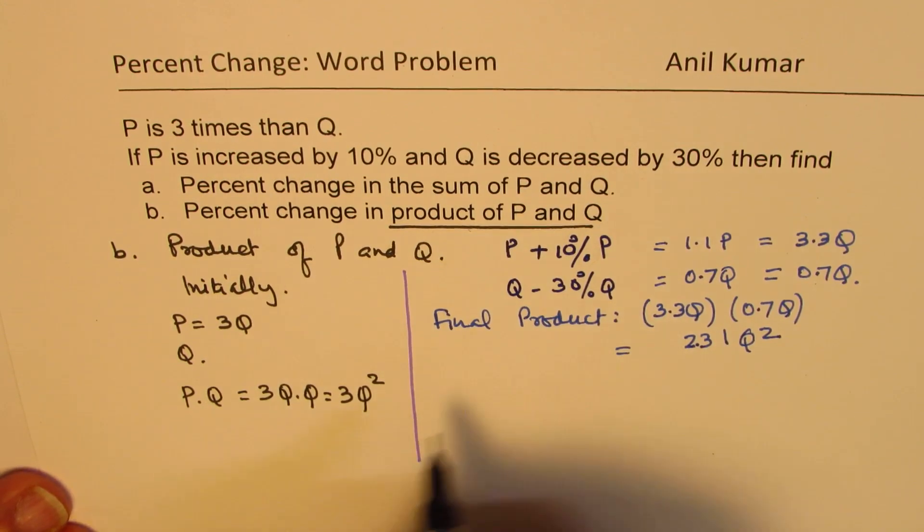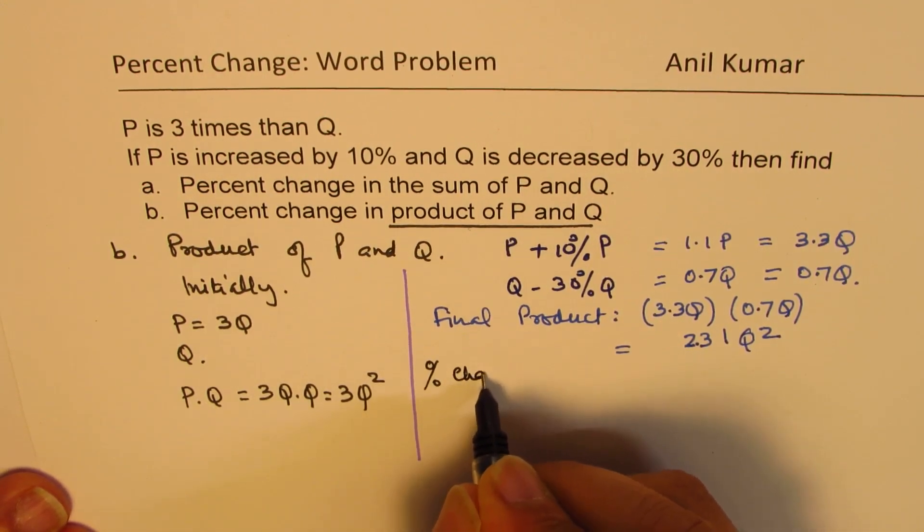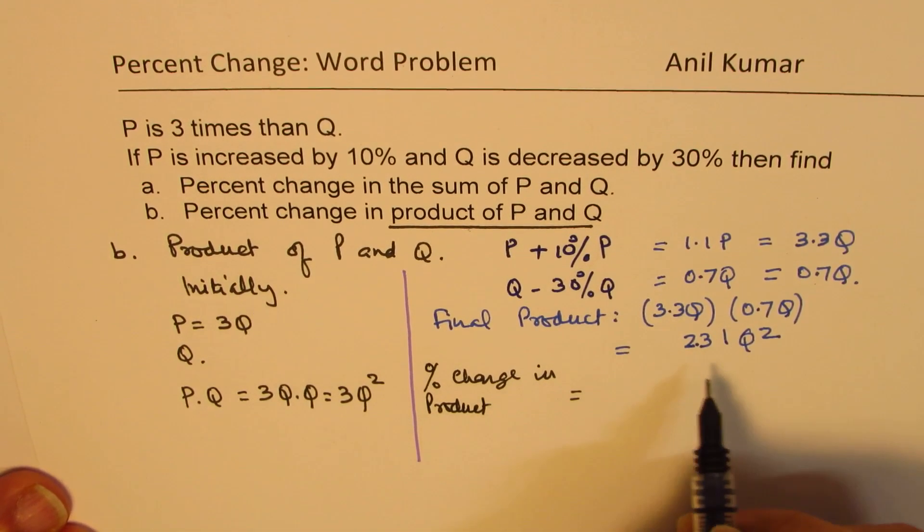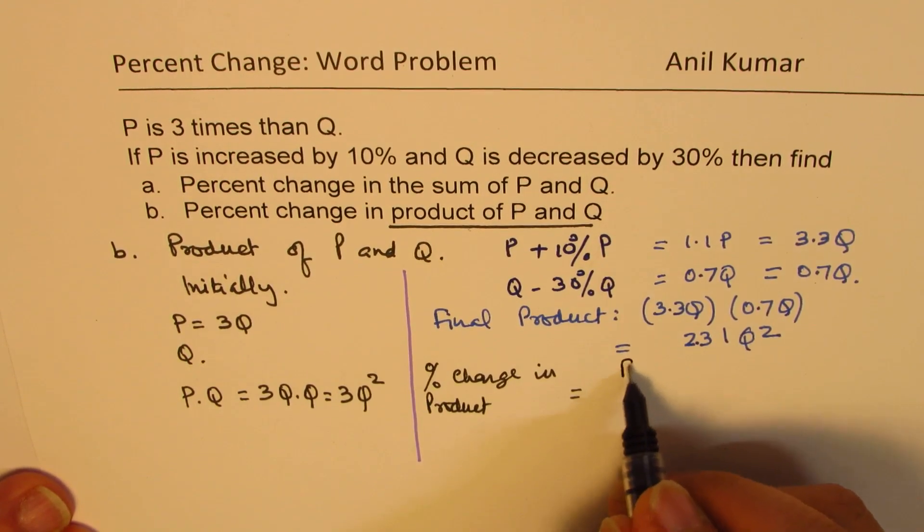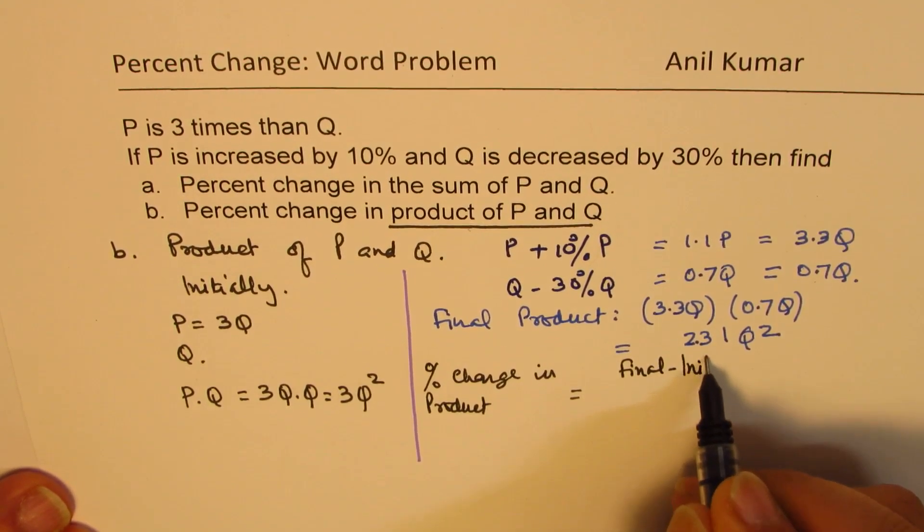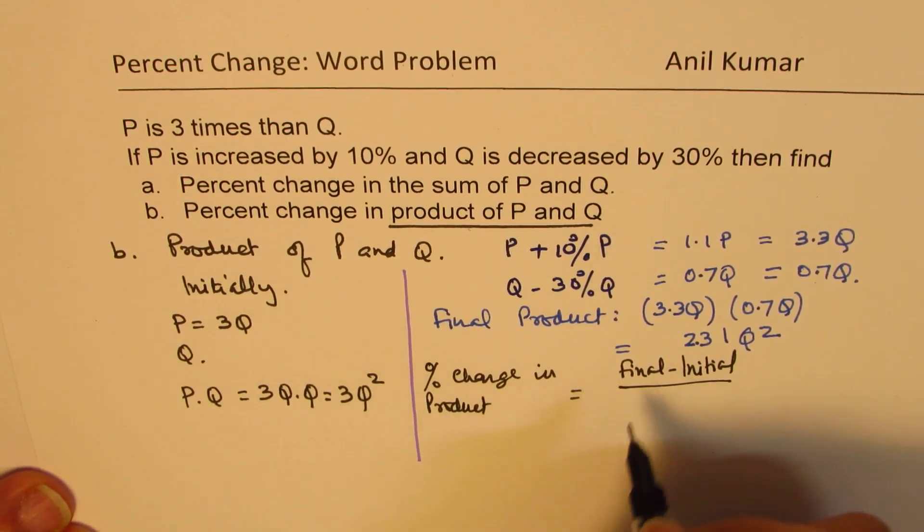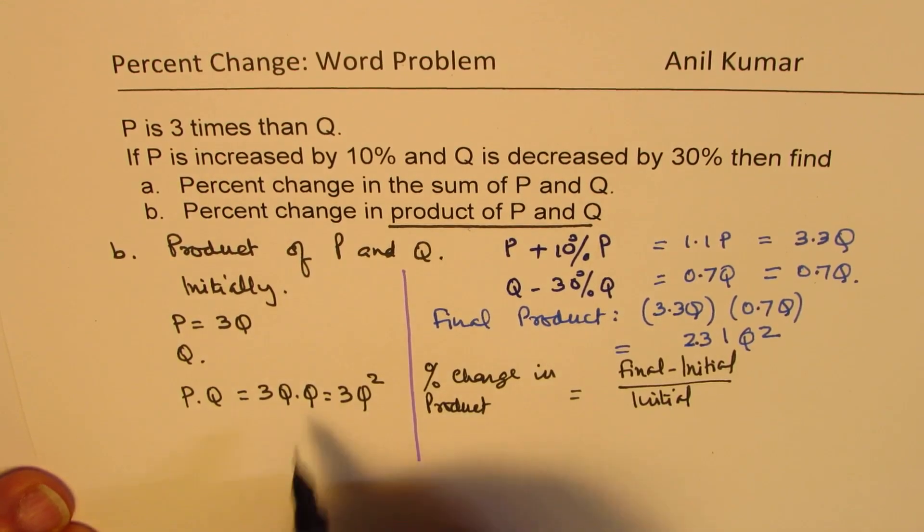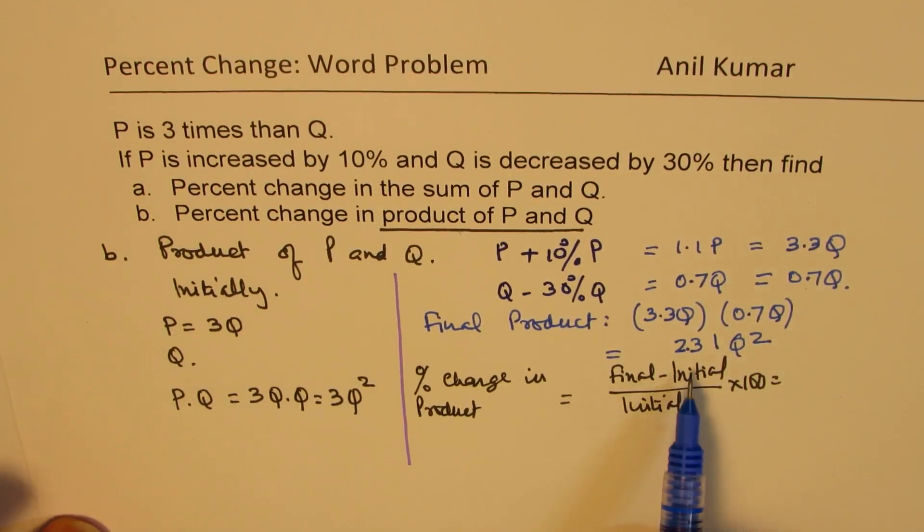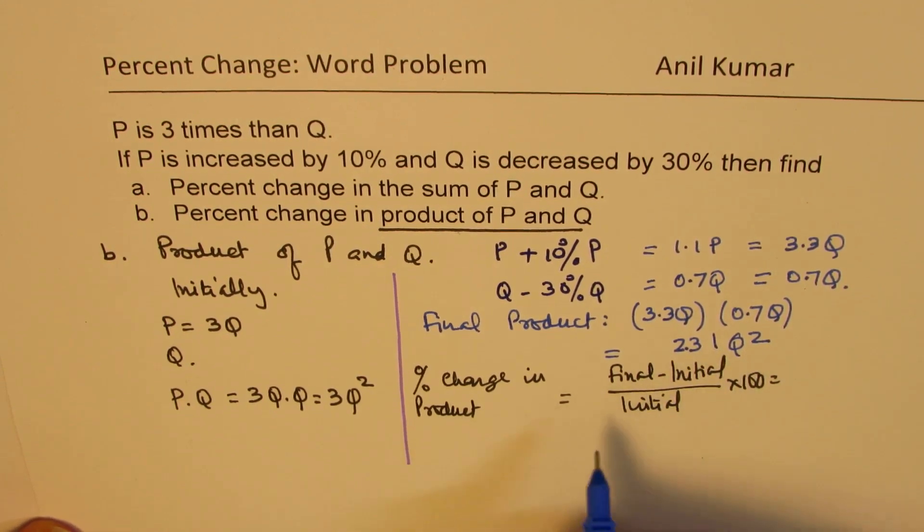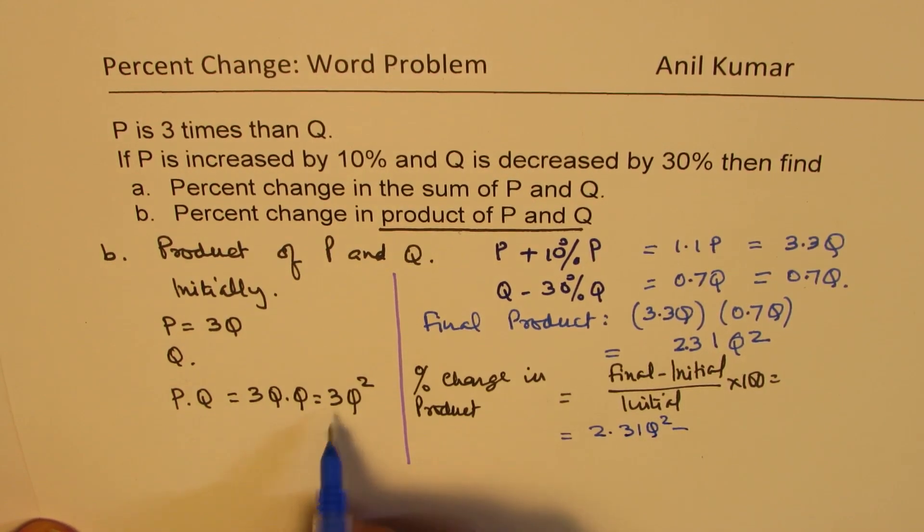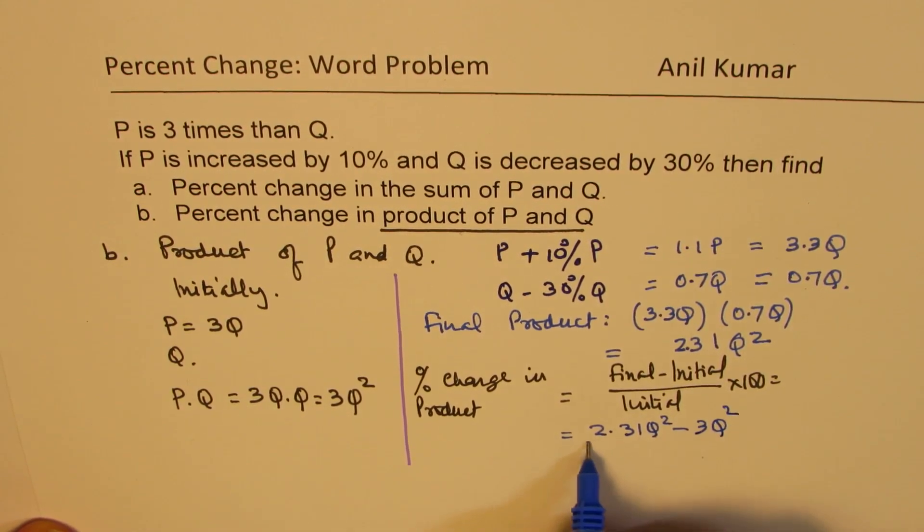So percent change in product is how much? Final value minus initial. That is a change over initial. It is very important to always divide by the original amount times 100. So now, let us substitute the values. So we have 2.31Q squared as the final value. So we can write this as 2.31Q squared minus the original value of 3Q squared divided by 3Q squared times 100.